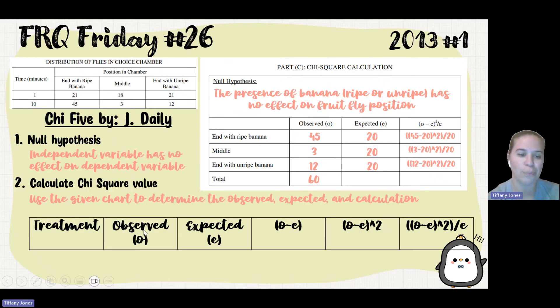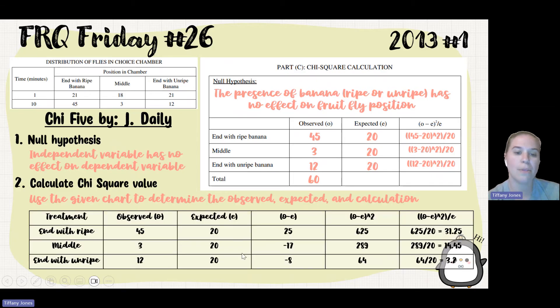Now as I said, I use this other chart where I have my treatment or my variable or whatever the different options are. I put them under treatment. I say what my different observed were. I then put my expected. I do my observed minus expected. Then I square it, and then I divide by my expected.